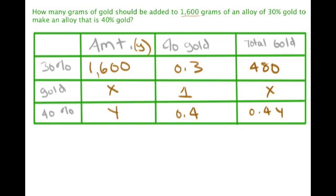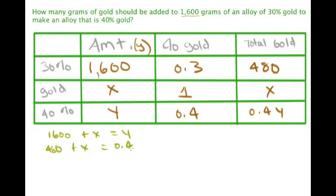Our first equation is about the amounts: 1600 plus x equals y. The second equation is about the total gold: 480 plus x equals 0.4y. Now I'm going to use the elimination method to solve this system.